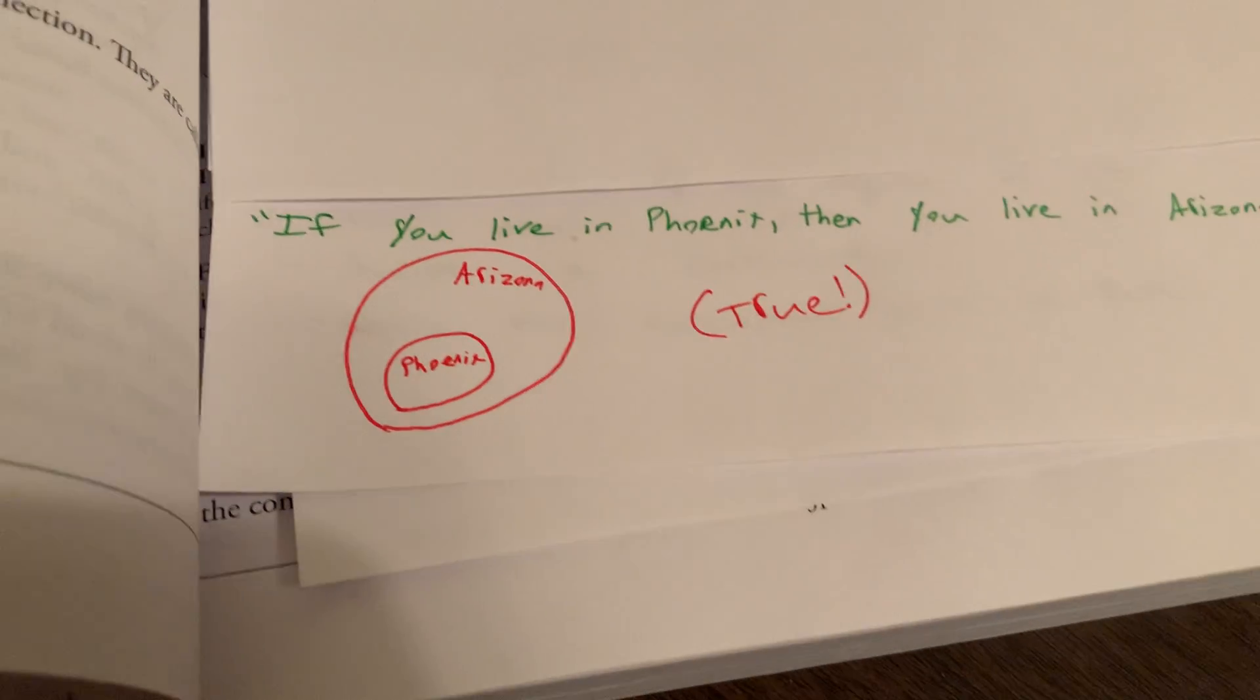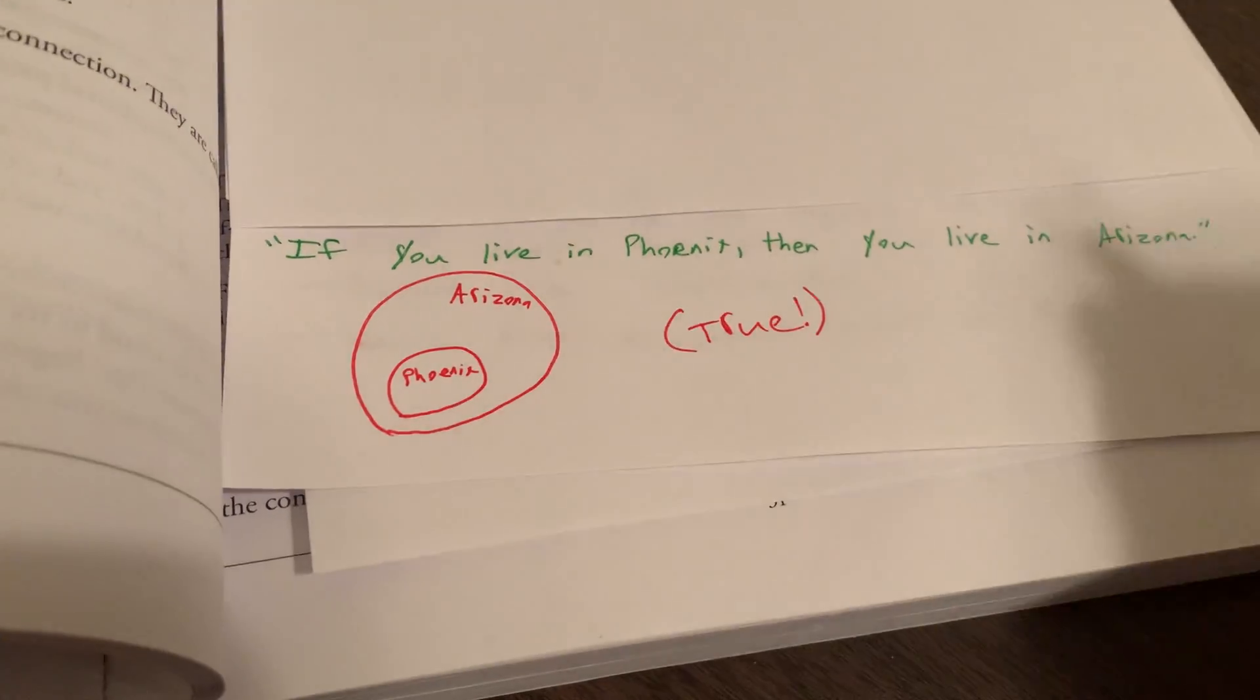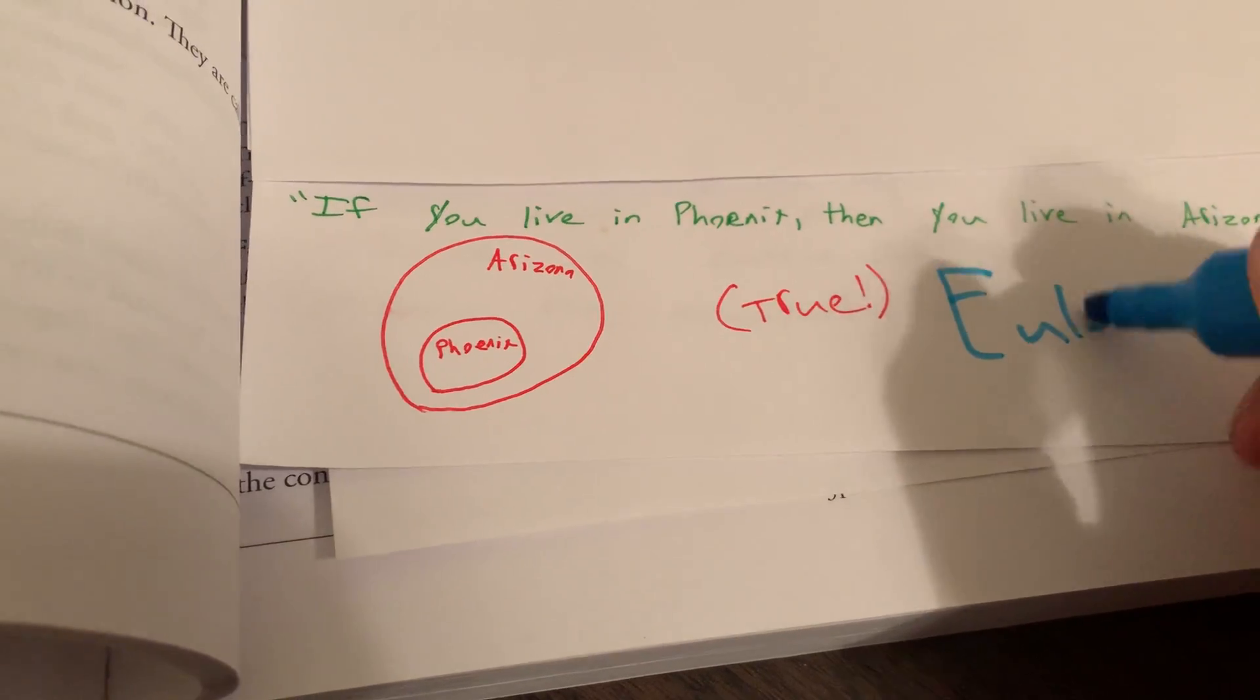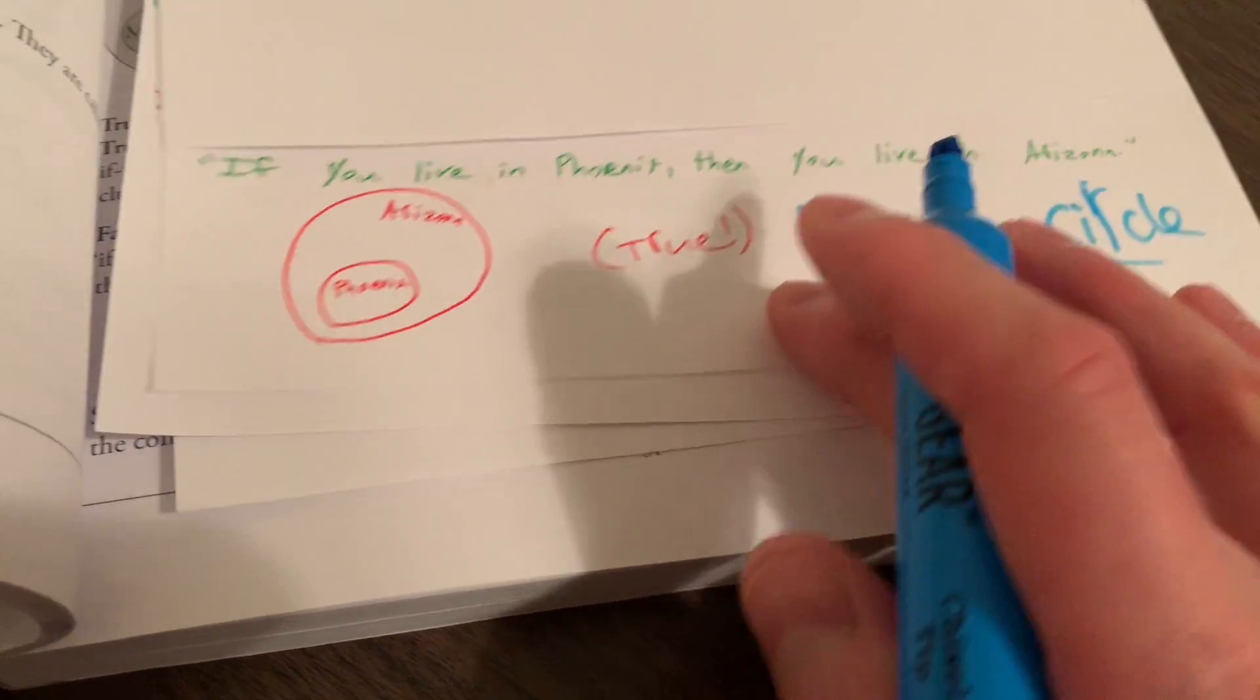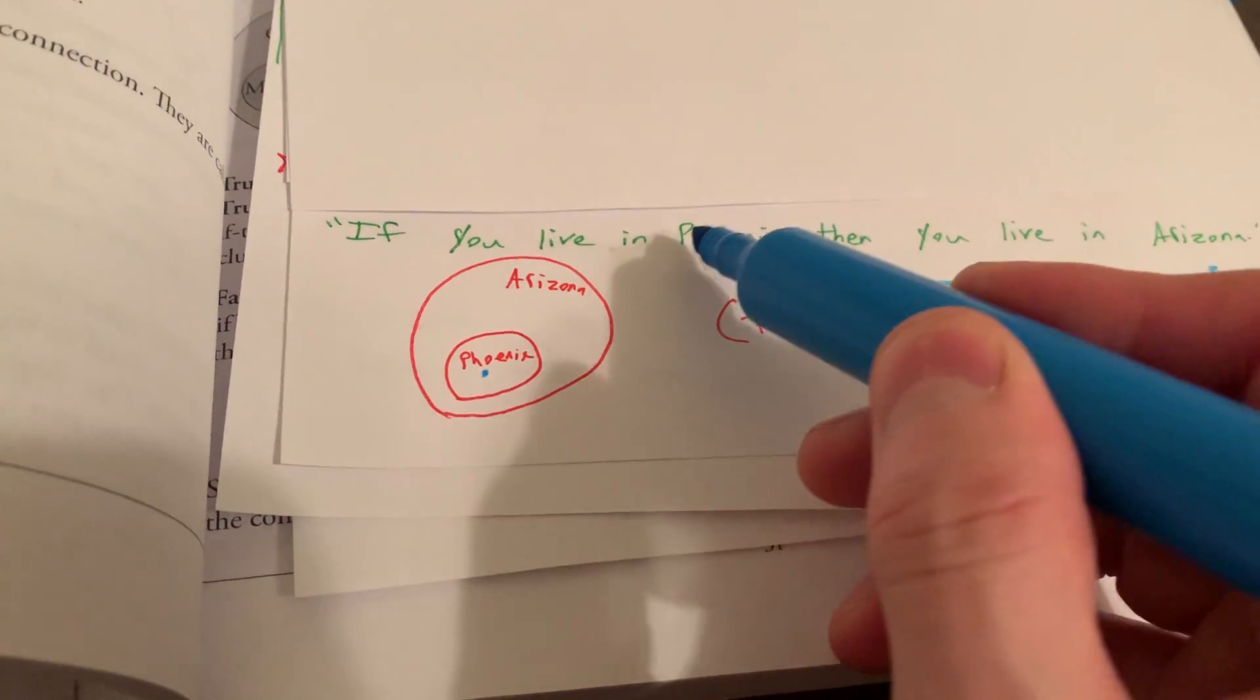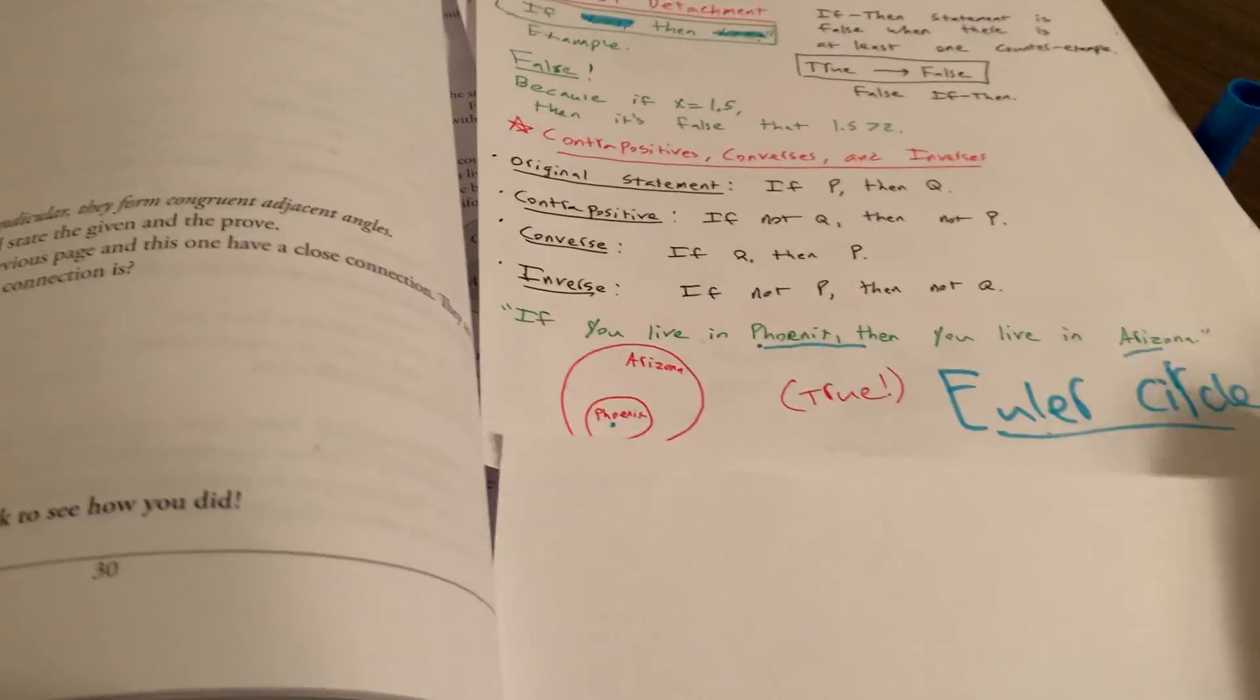So take the example, if you live in Phoenix, then you live in Arizona. Well, that's true. And we can diagram this. The book calls this a Venn diagram. I think it's better thought of as an Euler circle. So here is Phoenix, and it's part of Arizona. So if you live in Phoenix, then you live in Arizona. So that's true.